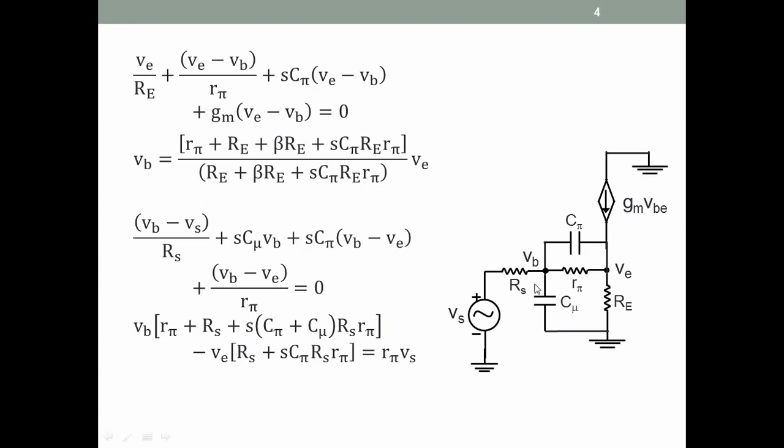Then we write an equation at the base node. Again, four terms: (vb − vs)/Rs, sCμ·vb, sCπ(vb − ve), and (vb − ve)/rπ. Four terms equal to zero. We multiply out by Rs and rπ, and then we will get vb, ve, and vs on the right-hand side. Now we substitute for vb from here into this equation, and then we take ve out. We will get one big expression for ve times something equal to rπ·vs.